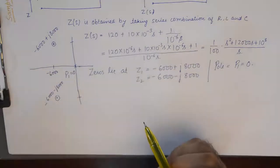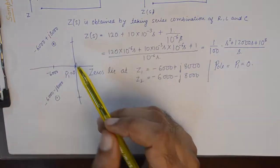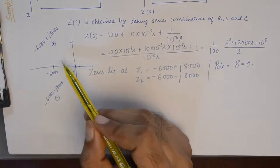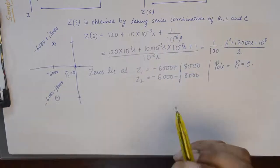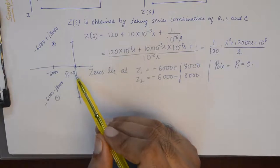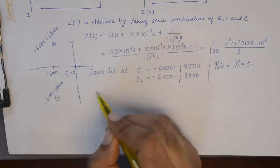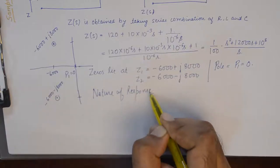So although we have zeros in the left hand side plane, which suggests that this could be a stable system, but we will go with the worst case scenario, and the presence of this pole at zero will determine that the nature of response is marginally stable.